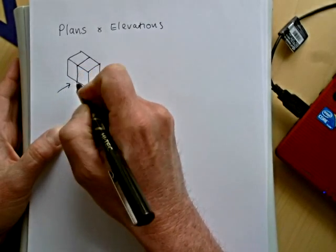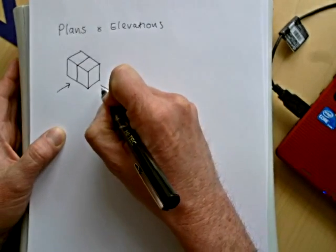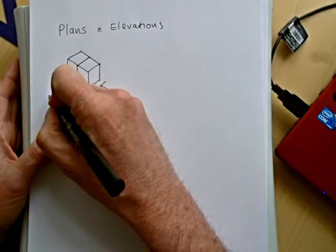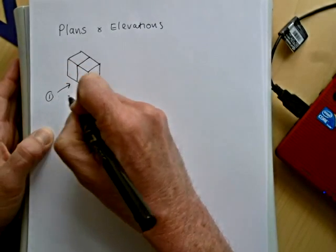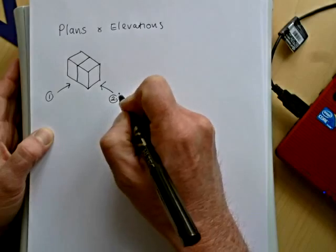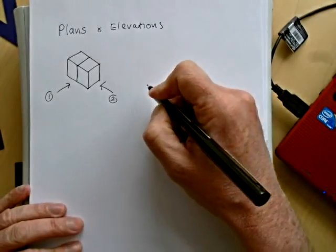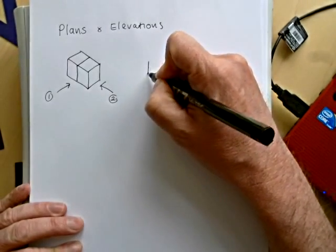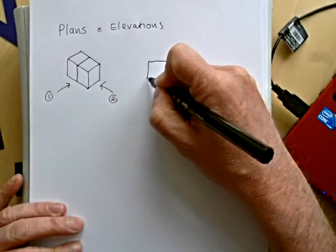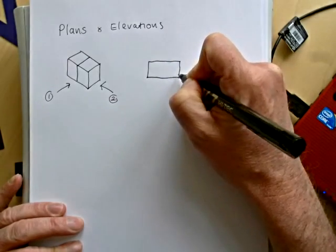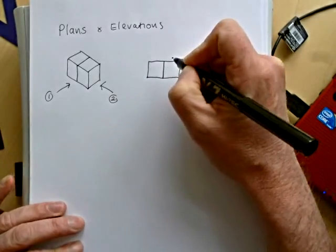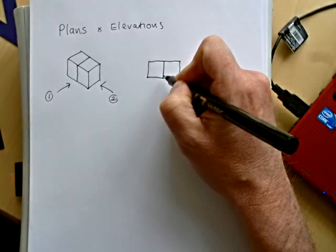If we look from the side, there's two sides we can look at. Let's call that side one and side two. Then these are elevations. Now, from elevation one, we're going to see the length, which is two. And as the two cubes together, we're going to see the seam of where the cubes are joined.